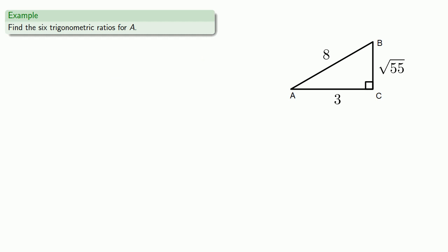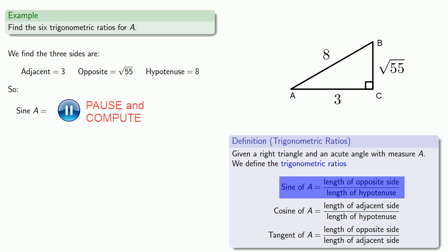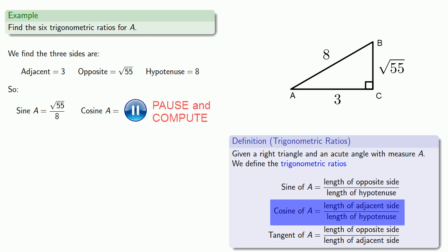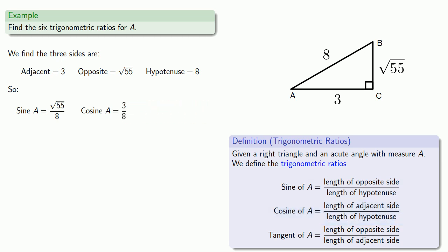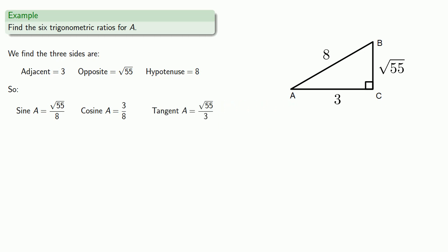Definitions are the whole of mathematics — all else is commentary — so we'll pull in our definitions for sine, cosine, and tangent. We identify the length of the opposite side, the adjacent side, and the hypotenuse. Sine is opposite over hypotenuse, cosine is adjacent over hypotenuse, and tangent is opposite over adjacent.